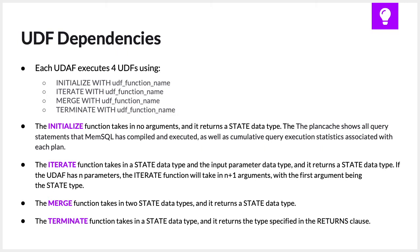The initialize function simply defines and returns our state variable. The iterate function will iterate over our dataset, accepting our state as a default argument and the provided value as the second argument, performing the necessary aggregation logic as it iterates. Once the data on the partitions have finished iterating, the merge function merges all of our state variables two at a time, until finally our terminate function defines what to return. Let's move over to Studio to see a full UDAF example.